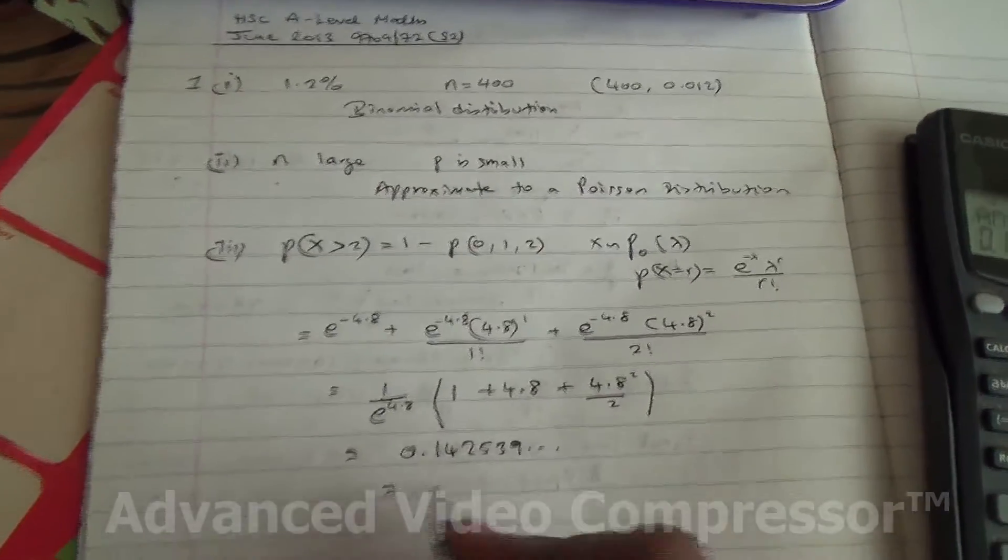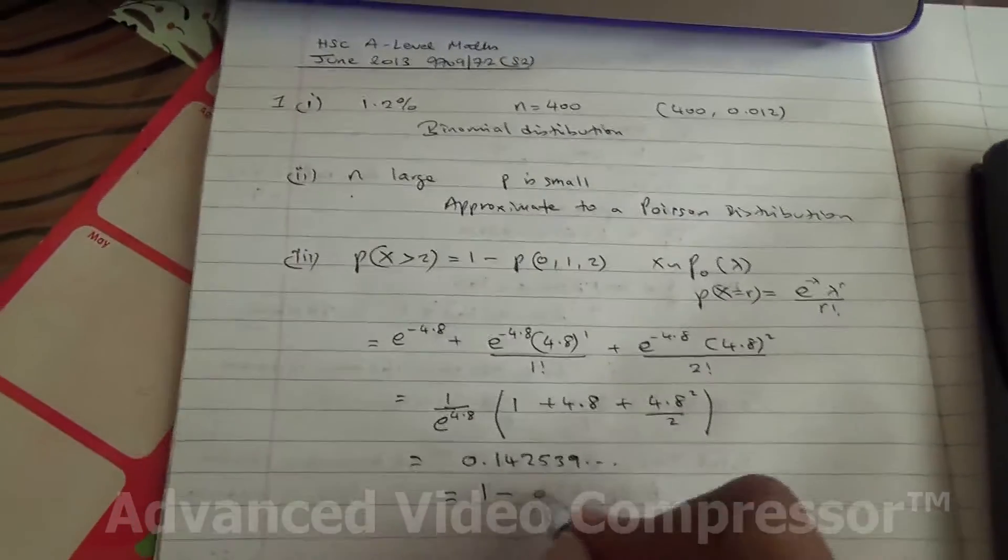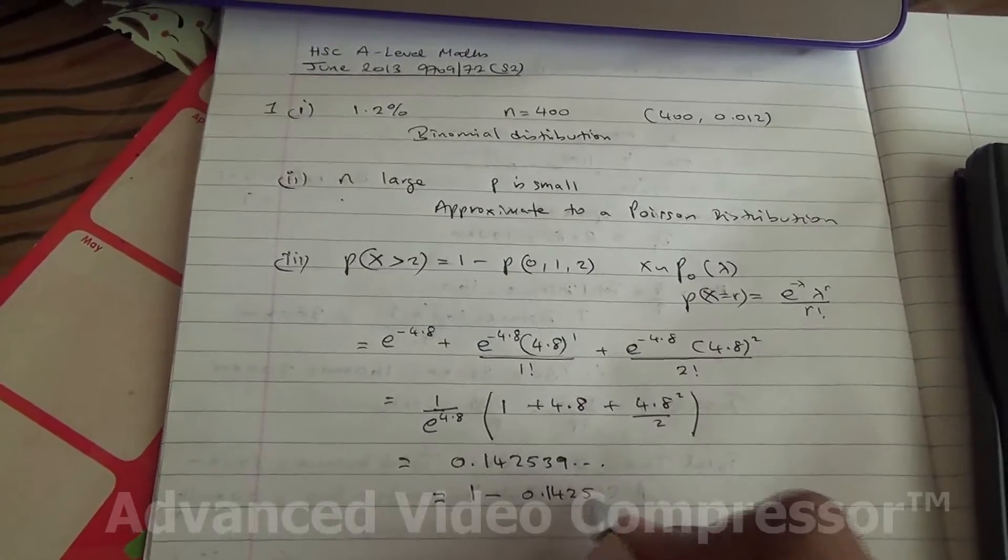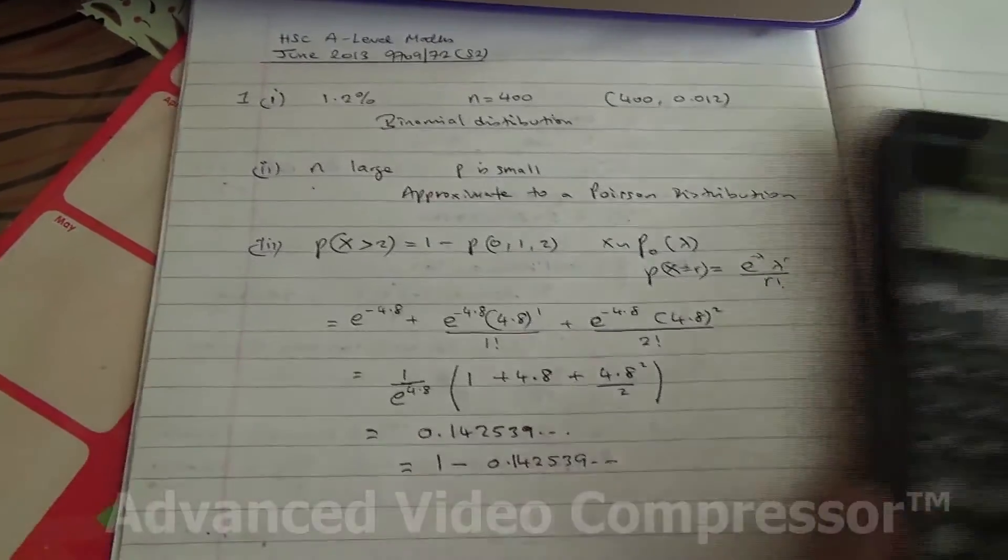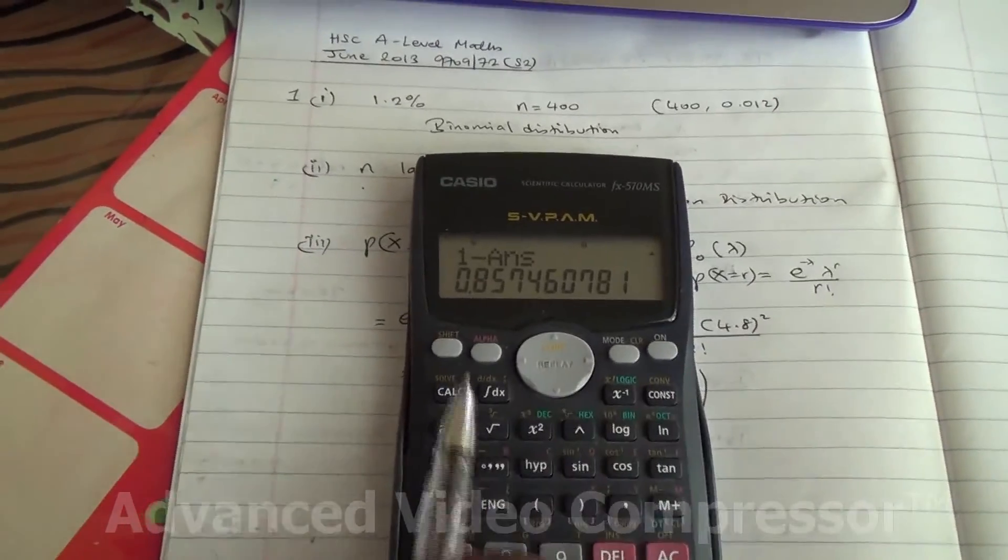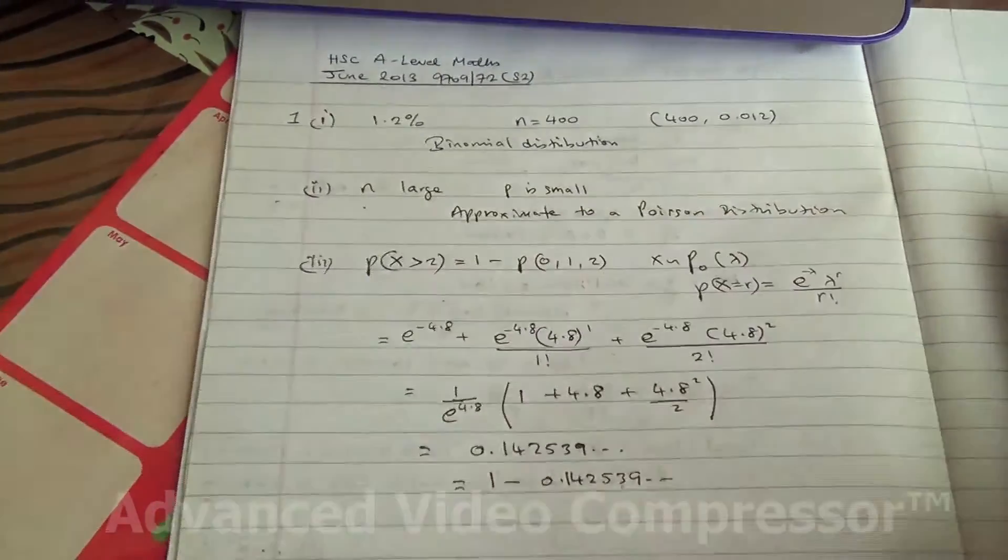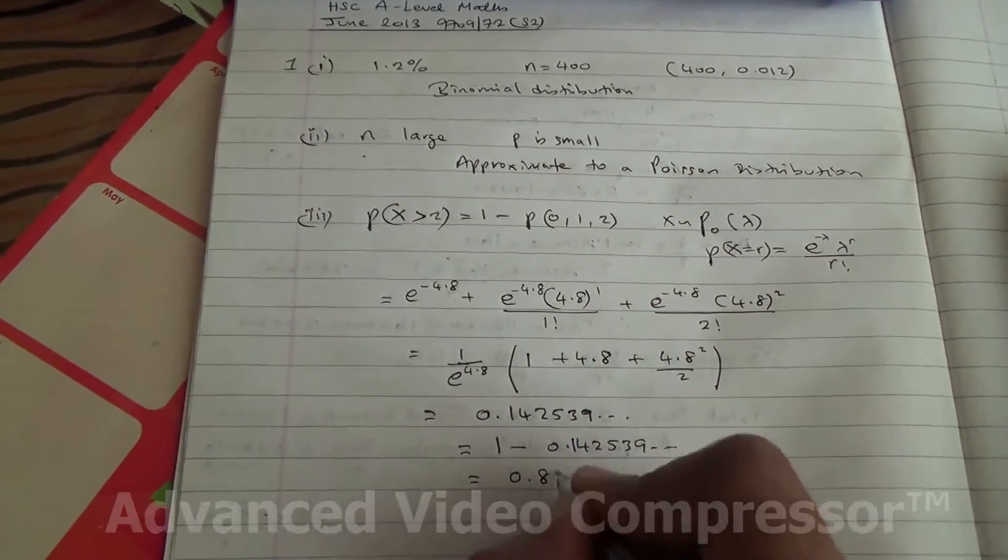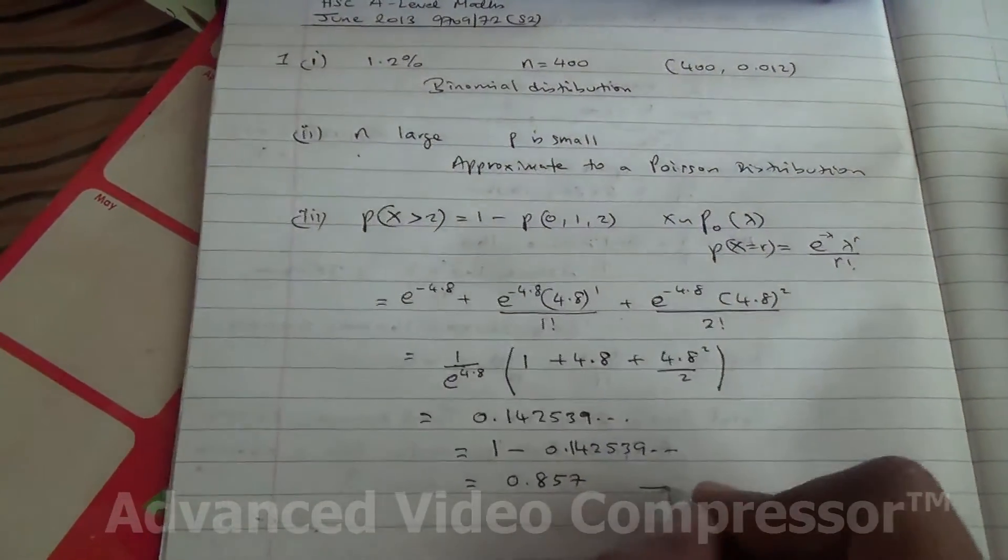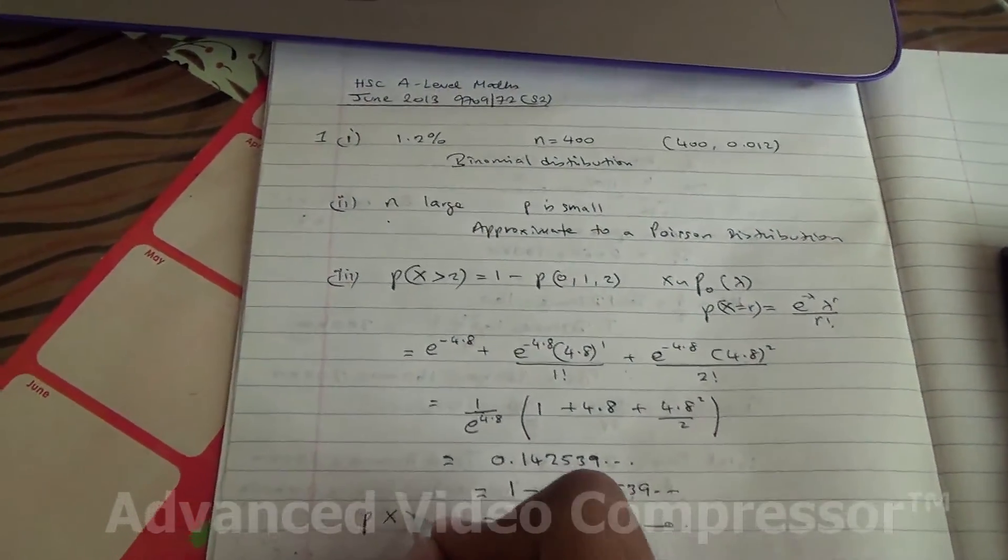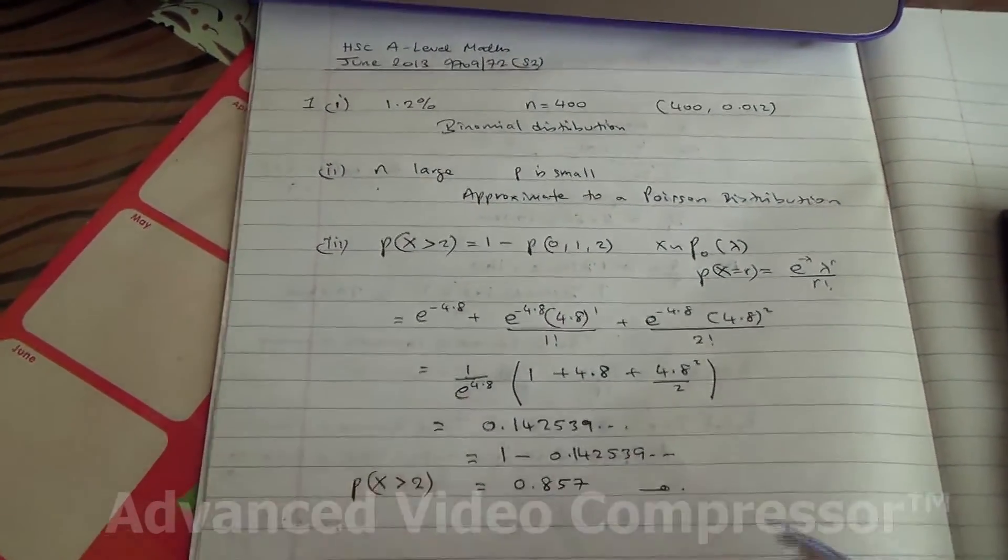So our probability is 1 minus this. Let's do it here. 1 minus the answer, so the answer should be then 0.857. So this is our probability that x is going to contain more than 2 bent rods.